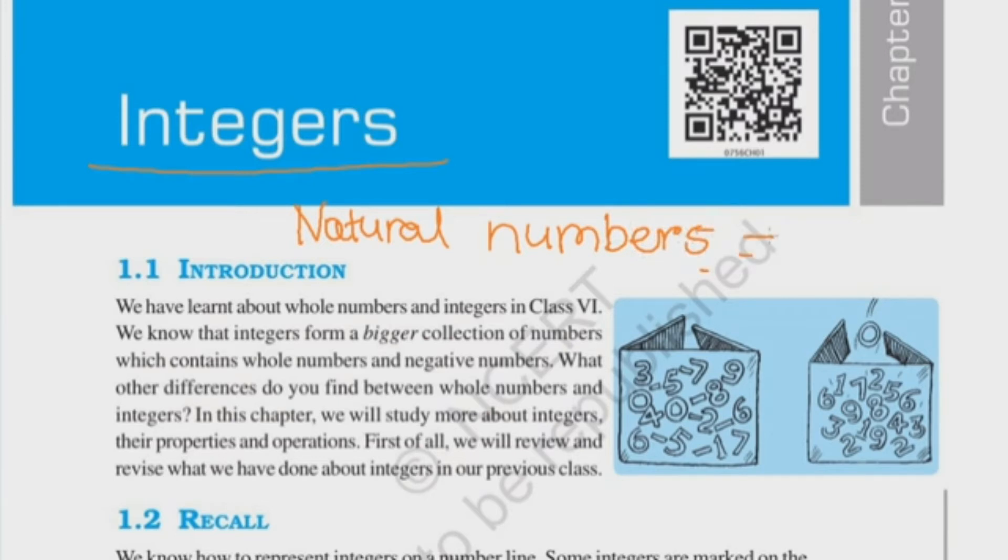Natural numbers, meaning those numbers 1, 2, 3, 4, which start from 1 and go to infinity. Positive numbers are called natural numbers. Second are whole numbers. Whole numbers, meaning natural numbers and zero is also added to them. Zero, 1, 2, 3 up to infinite. They are called whole numbers.